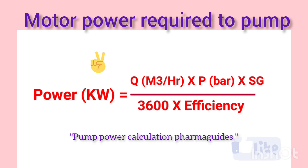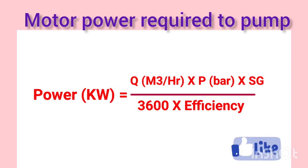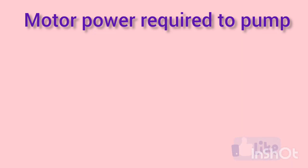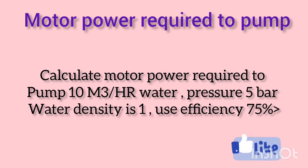Specific gravity is the density of the fluid being pumped divided by the density of water. Once you have all of these values, you can use the formula to calculate the power required to pump the fluid.